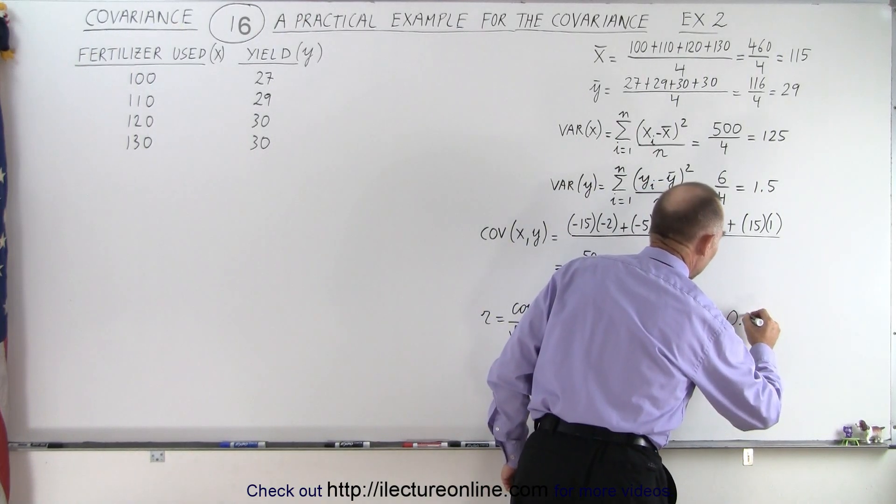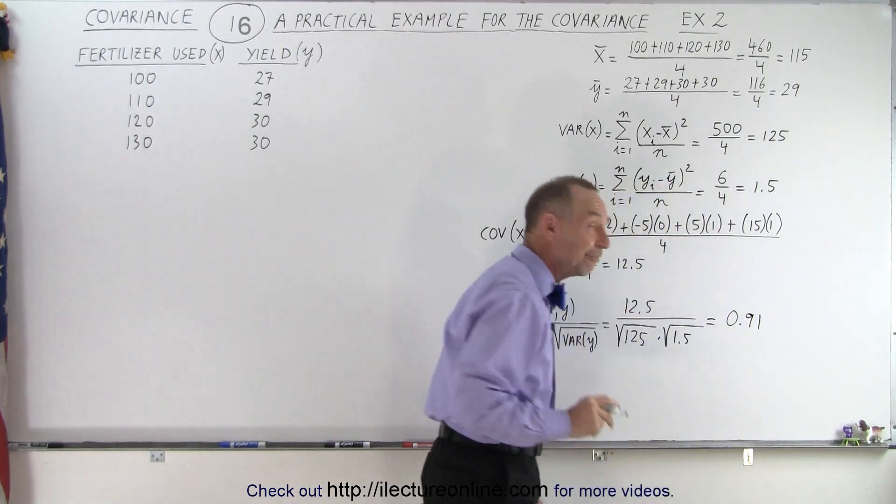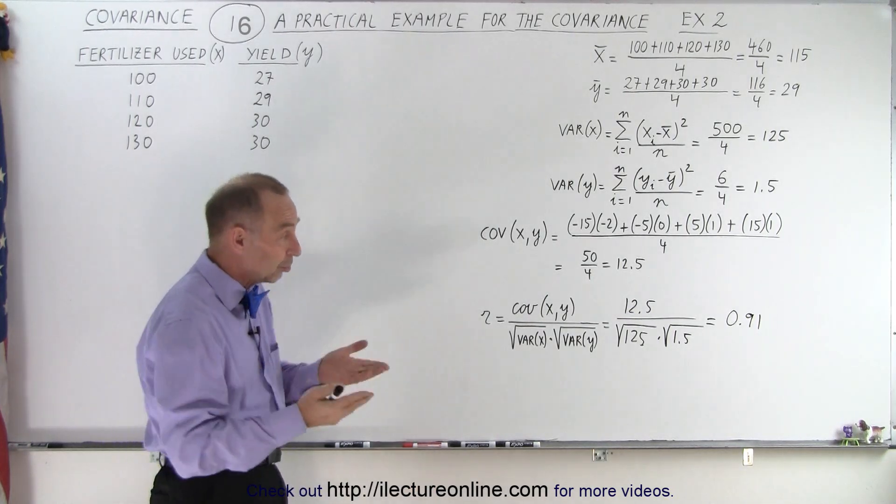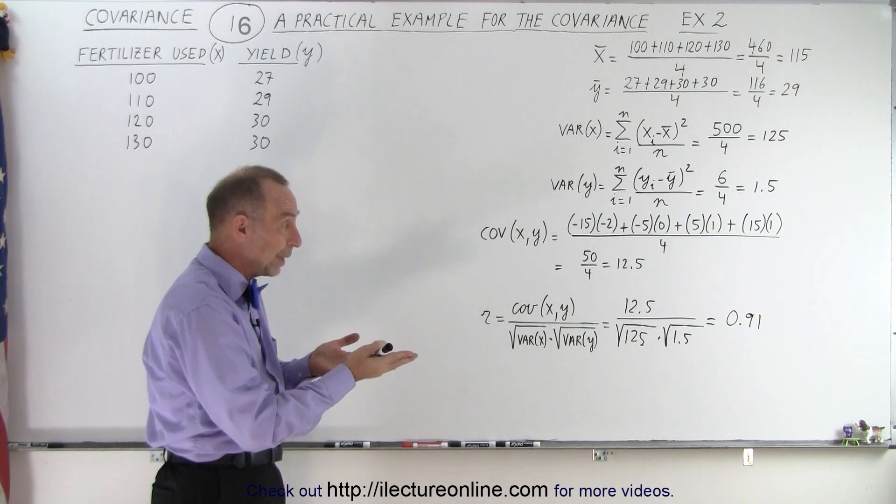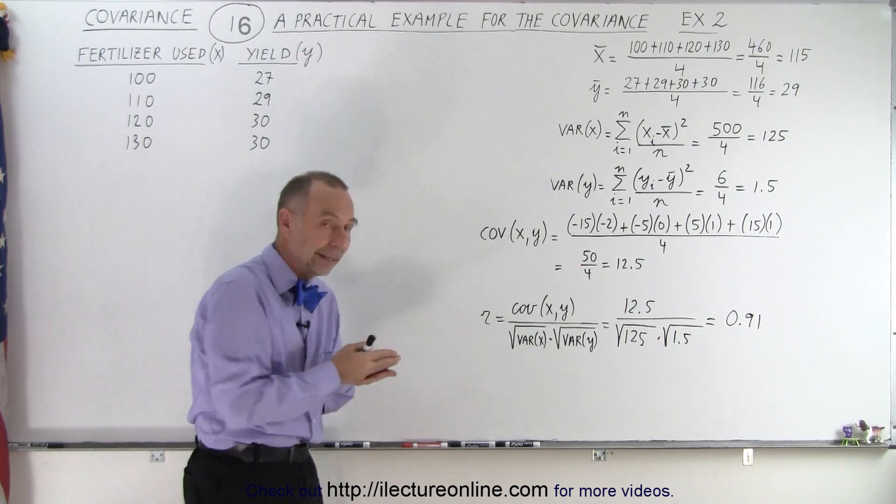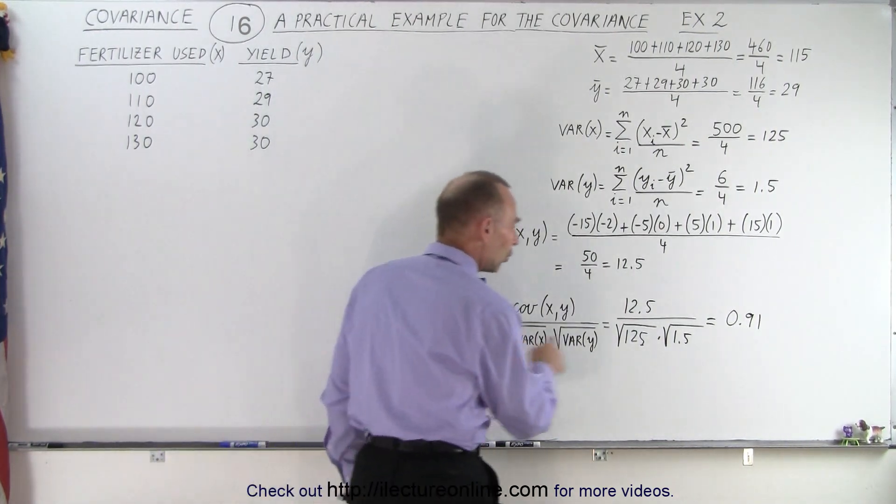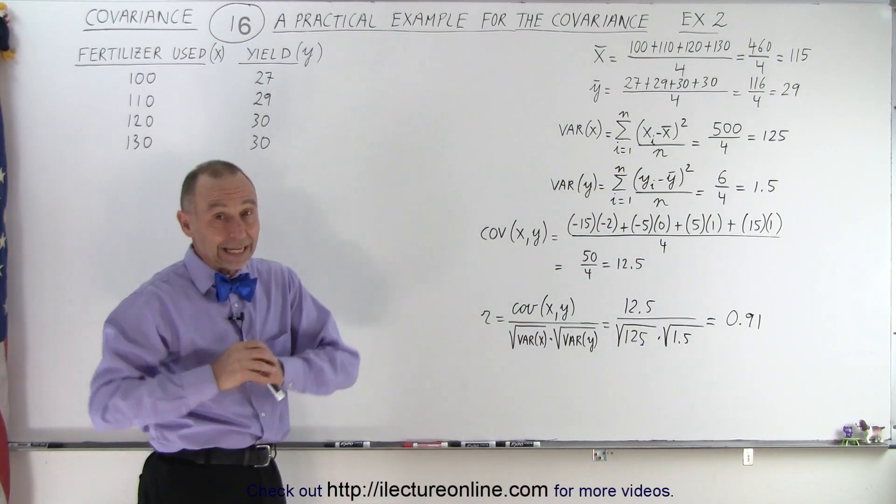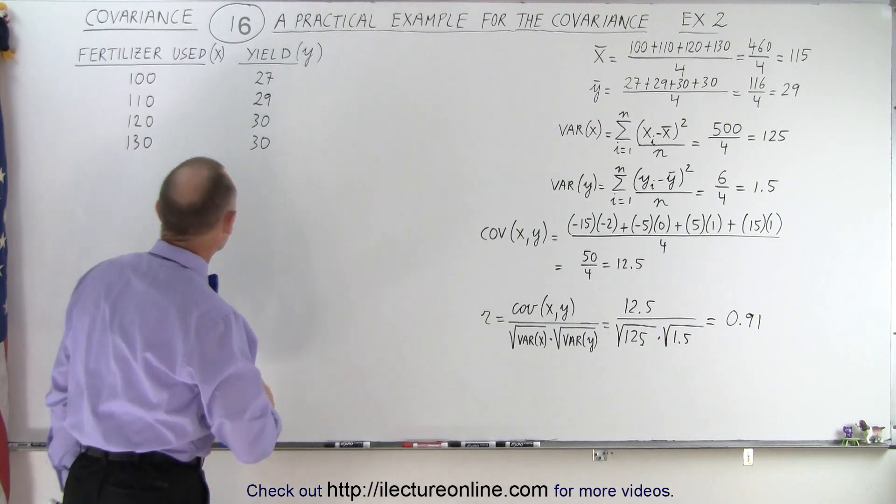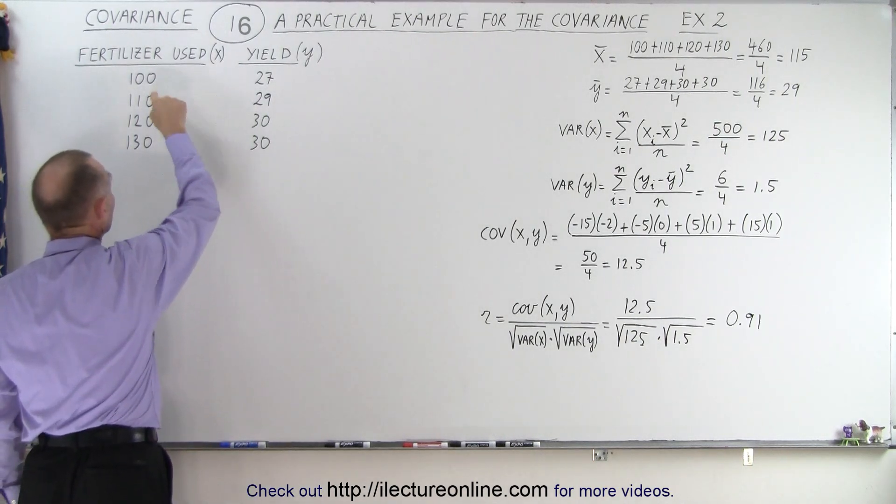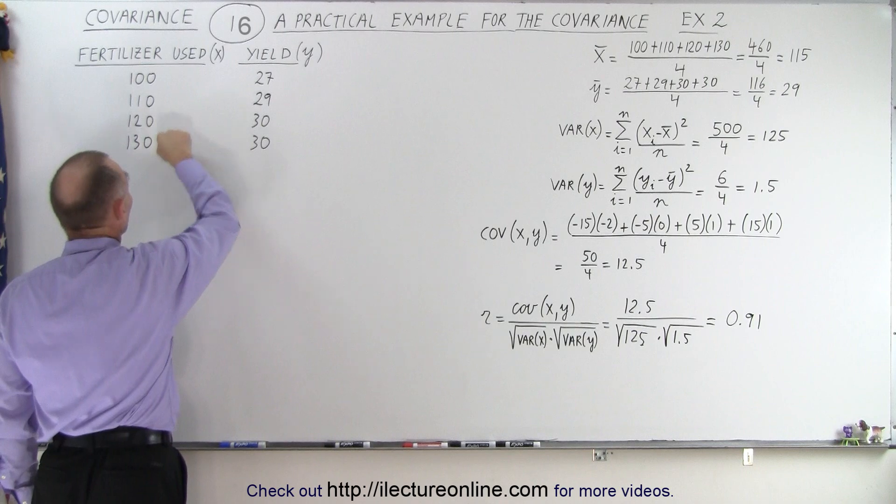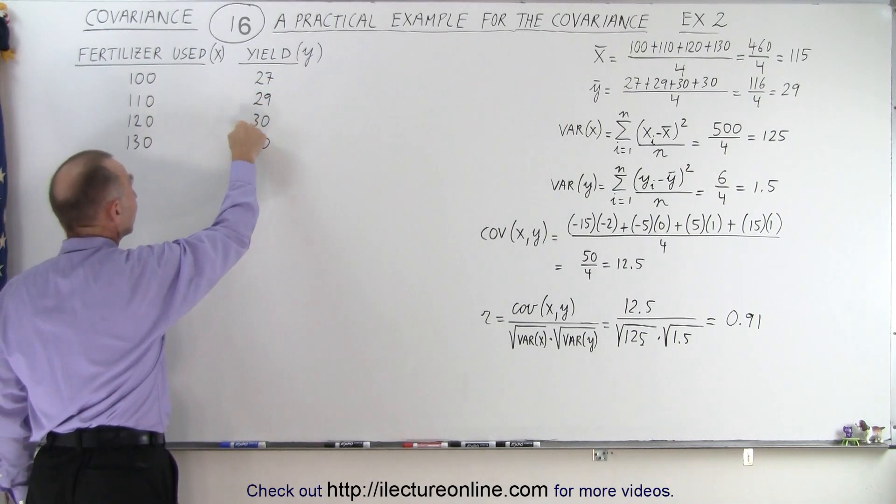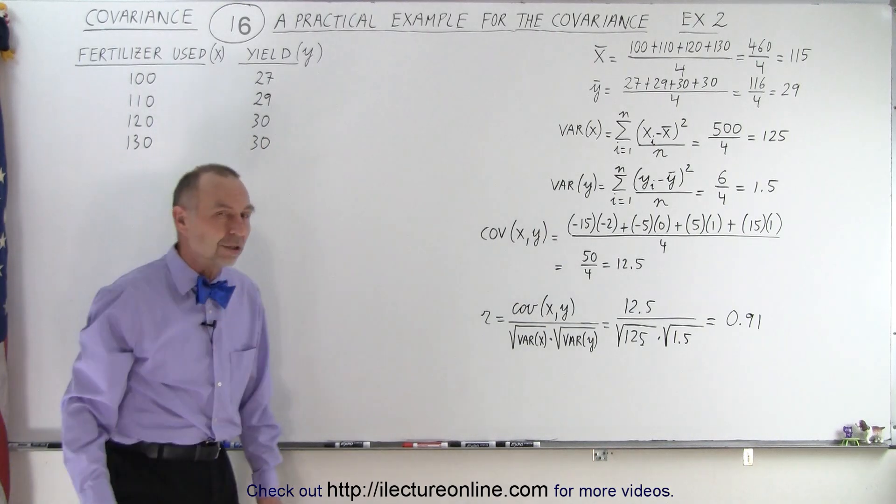So 0.91. Notice that it's still fairly close to 1, which implies there's a fairly strong correlation between increased use of fertilizer and increased yield. But in this case, the correlation coefficient kind of gives you a false impression. Yes, there seems to be a strong correlation, but is it really worth it to use an extra 30% of fertilizer in order to get a little bit more yield? Notice going from 120 to 130 didn't appear to make any change in the yield.